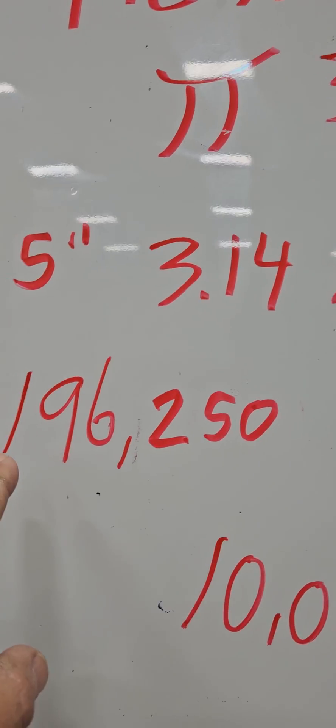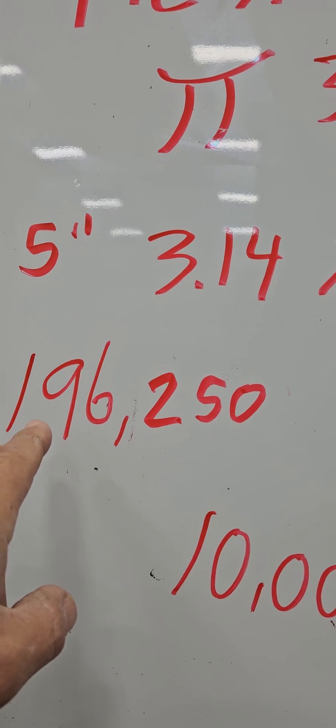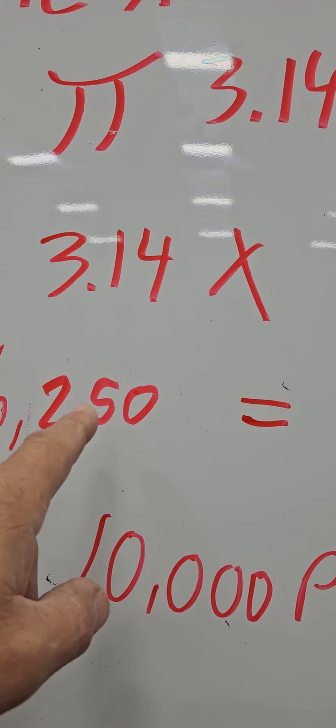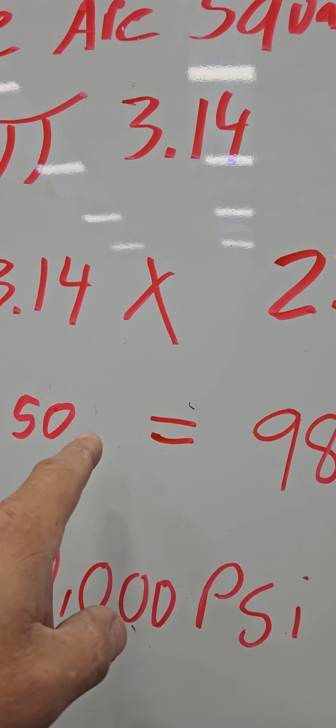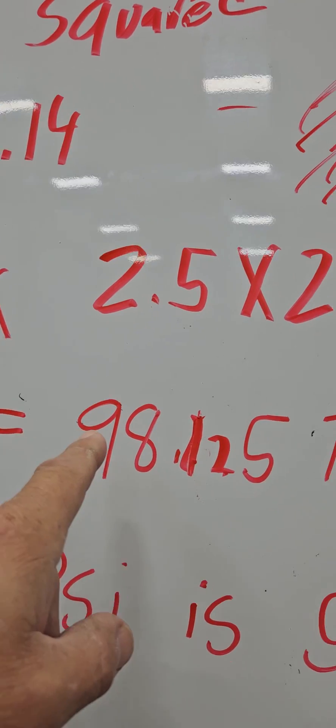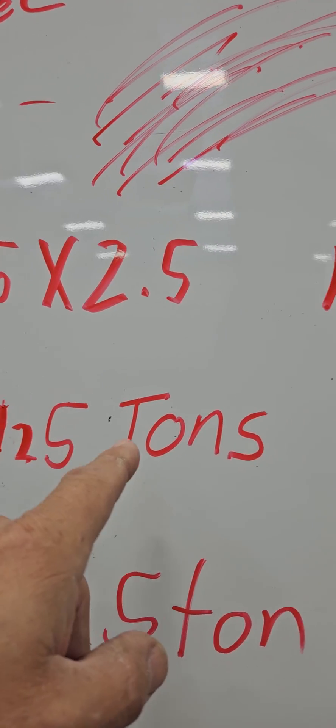Now you're going to times that by the pressure of 10,000. You're going to get 196,250 pounds, which equals 98.125 ton.